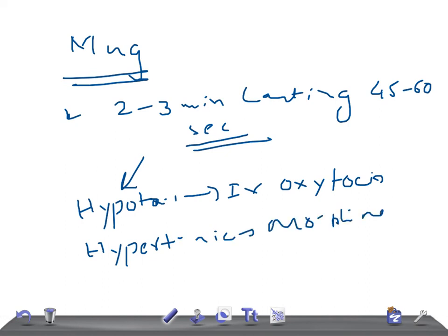If there is any abnormality in delivery or a prolonged active phase related to pelvic issues, an emergency Caesarean section should be performed. This has been a brief video on prolonged active phase. Thank you so much for watching. Take care.